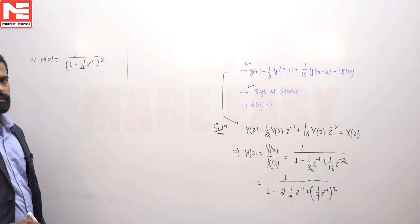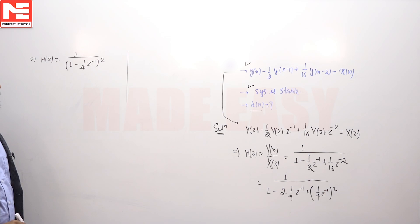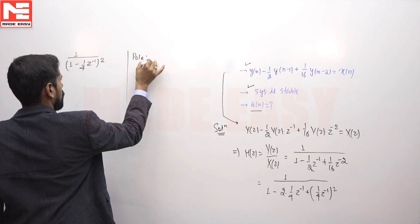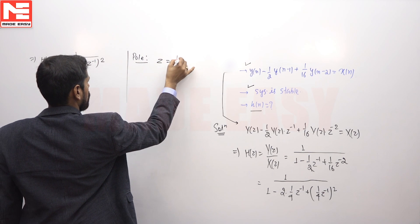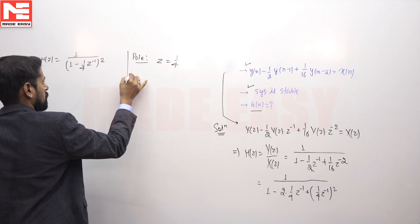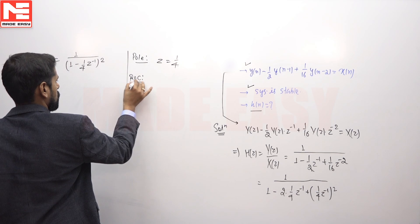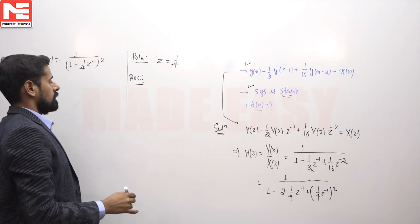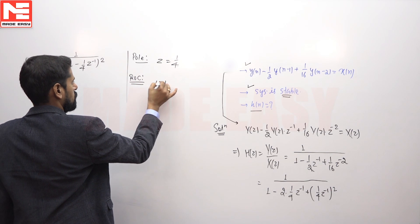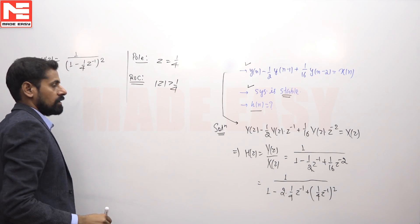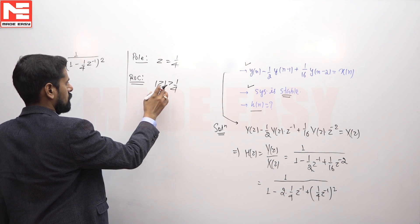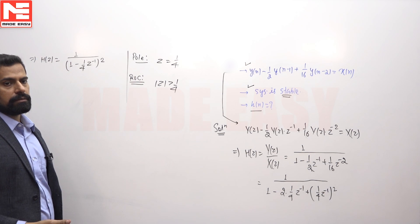Region of convergence is always related to magnitude of the pole. If we calculate pole location, the pole will be located at z equals 1/4. Region of convergence for stability should be mod z greater than 1/4, because in this case the region of convergence is outside a circle of radius 1/4.